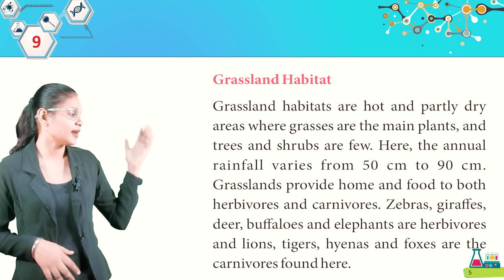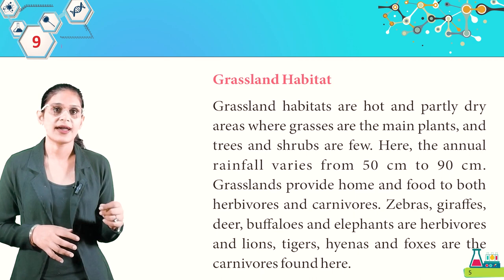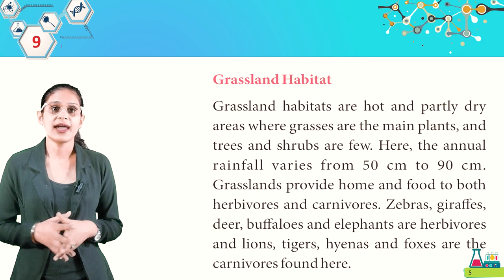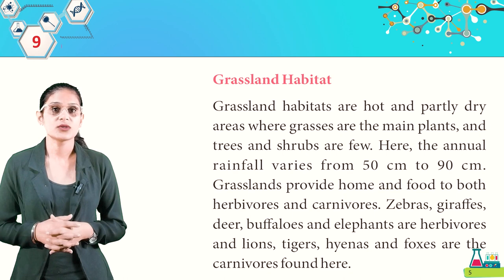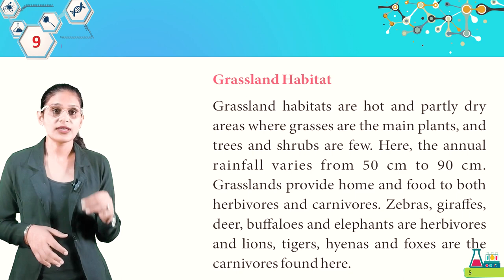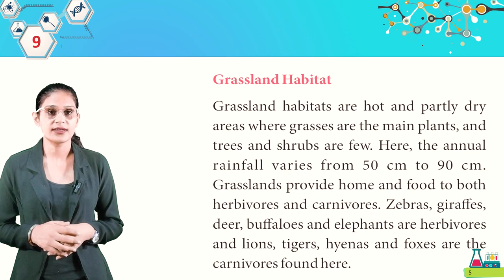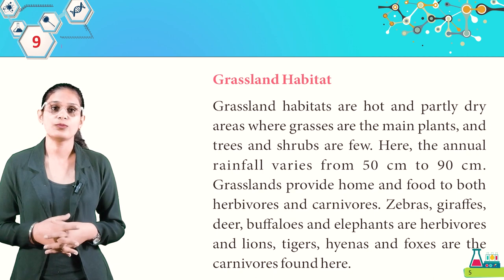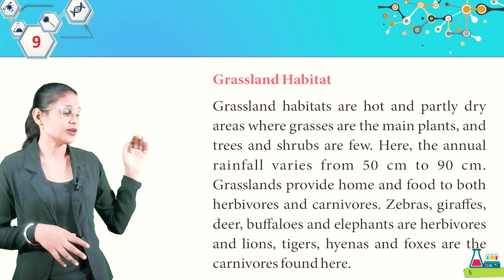Grassland habitats are hot and partly dry areas where grasses are the main plants and trees and shrubs are few. The annual rainfall varies from 50 cm to 90 cm. Grassland provides home and food to both herbivores and carnivores. Zebras, giraffes, deer, buffaloes, and elephants are herbivores, while lions, tigers, hyenas, and foxes are the carnivores found here.